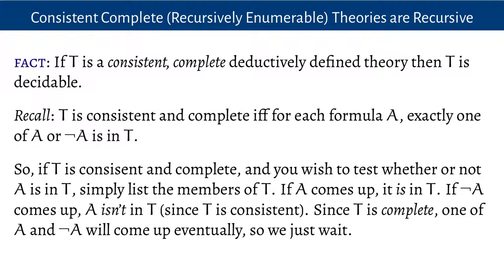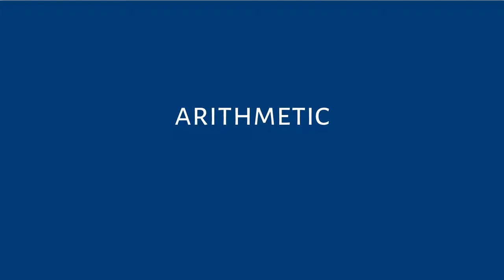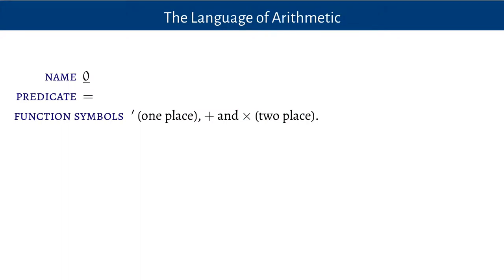Arithmetic theories of numbers are definitely in that space of potentially undecidable theories. To refresh your memory: the language of arithmetic contains one constant — a name written as zero with an underline — to distinguish the syntactic symbol from the actual number zero. When focusing on the syntax of the language, we use the underline; when focusing on the thing that syntax names in the intended model, we use the name without the underline.